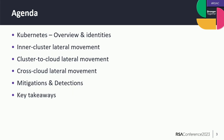This is the agenda for today. We will start with a short overview of Kubernetes and its identities. Then we will talk about inter-cluster lateral movements. Then we will move to lateral movement from the cluster to the cloud. We will also talk about cross-cloud lateral movement, and then mitigations and detections, and we will have some key takeaways.